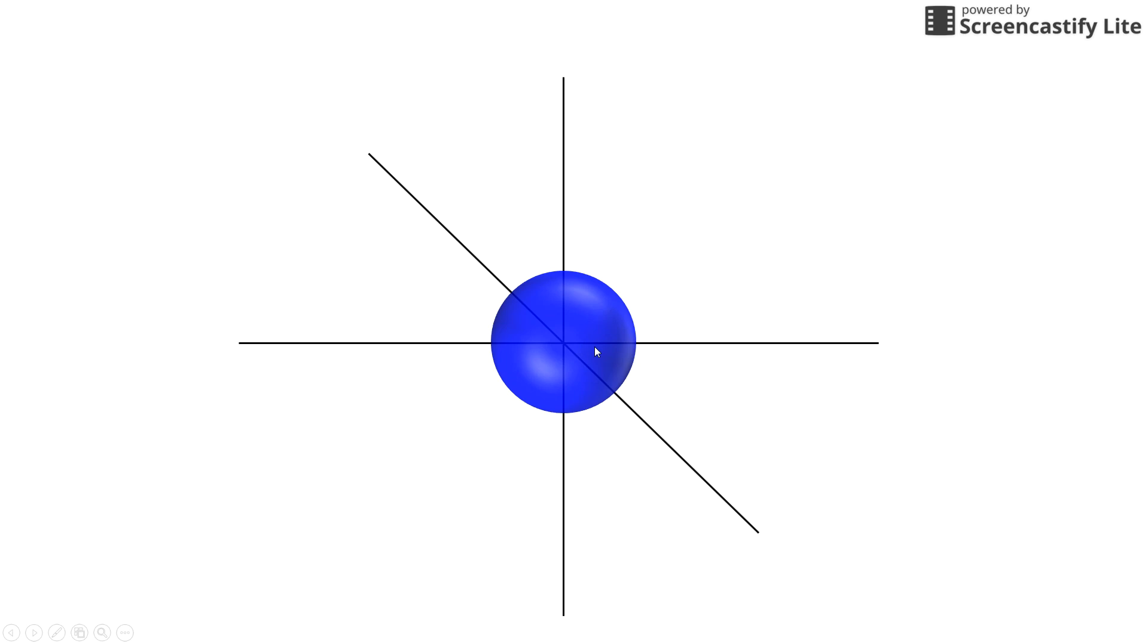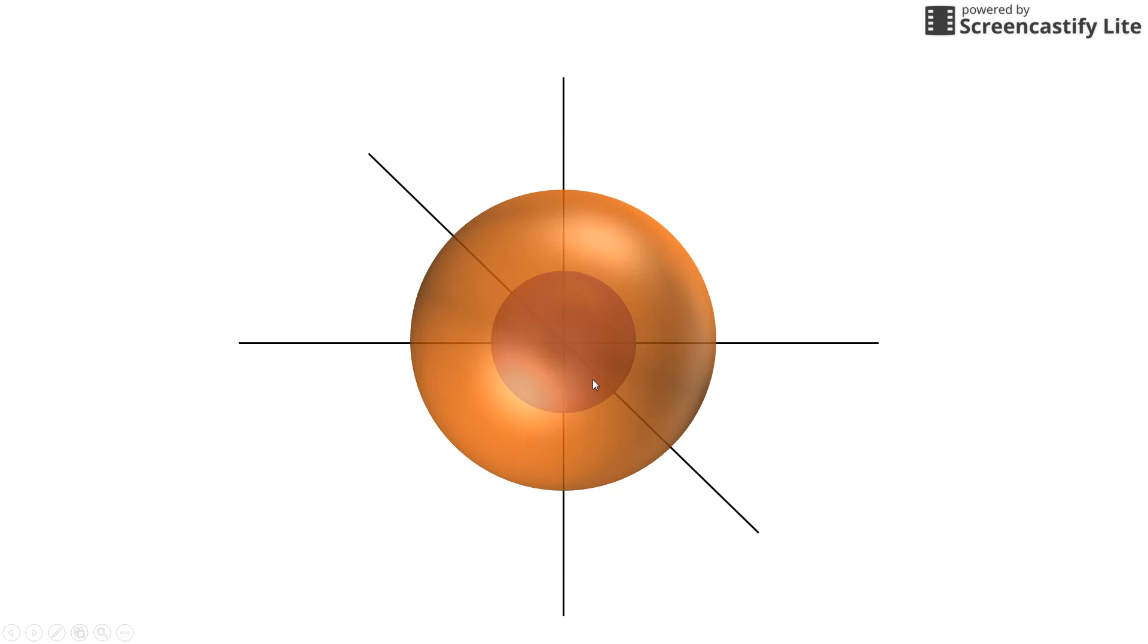The first energy level is also defined by the principal quantum number n. For our purposes, n equals one, two, three, or four. The first energy level has one orbital in it. The second energy level has four different orbitals in it.